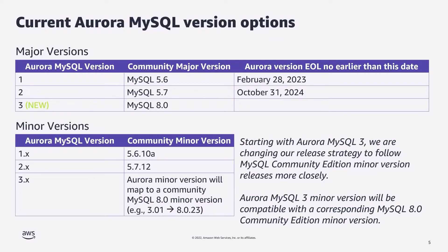MySQL 5.6 is already end-of-life in Community, and we are looking to do the same on Aurora's side. We have what we call a 'no earlier than' date to give customers more transparency — a signal that if they're on an older version, they should plan to move to a newer one. Nothing will happen before this date, but the date may be pushed out so customers get more time. For example, Aurora MySQL 2.0 end-of-life was March 2024, now pushed to October 2024, and it may get pushed further but never brought back.